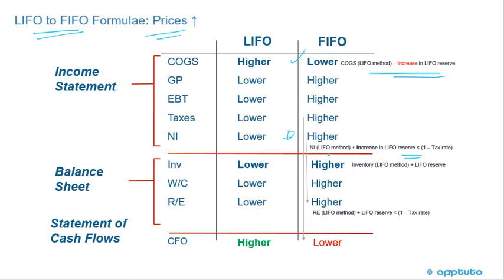Net income under FIFO equals net income under LIFO plus the increase in the LIFO reserve, times one minus the tax rate. We also have to adjust retained earnings and inventory. Inventory is higher under FIFO: it's the LIFO inventory plus the entire reserve. Retained earnings under FIFO equals retained earnings under LIFO plus the entire LIFO reserve times one minus the tax rate.